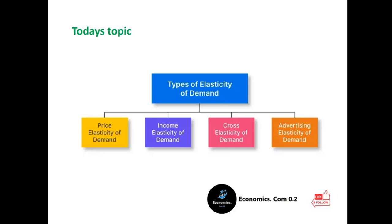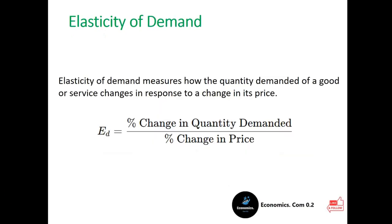Today's lesson is on types of elasticity. There are different types of elasticity of demand. In this video lecture, we will focus on price elasticity of demand. First of all, let's understand the concept. Elasticity of demand refers to how sensitive the quantity demanded for goods or services is to a change in its price. In simple terms, it measures how much the demand for a product increases or decreases when its price goes up or down.